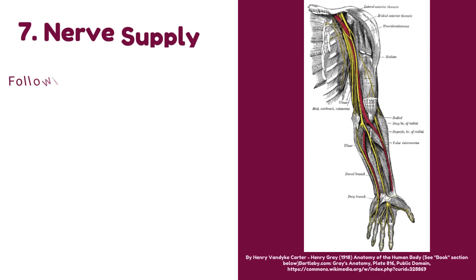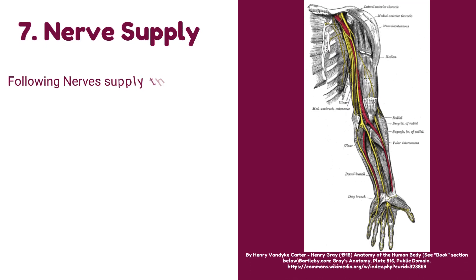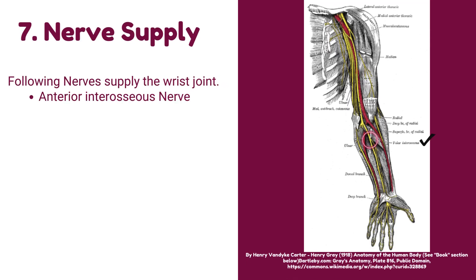Number 7: Nerve supply of the wrist joint. The following nerves supply the wrist joint: the anterior interosseous nerve and the posterior interosseous nerve.